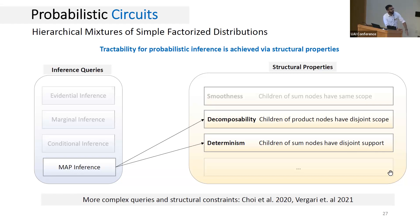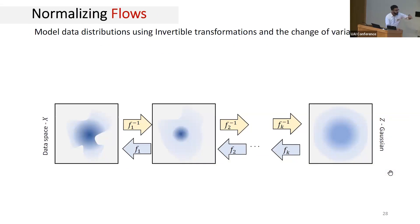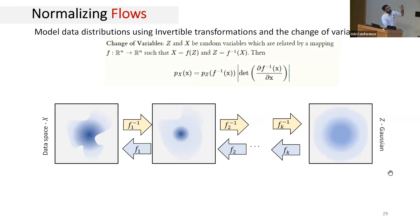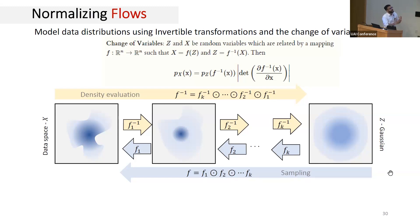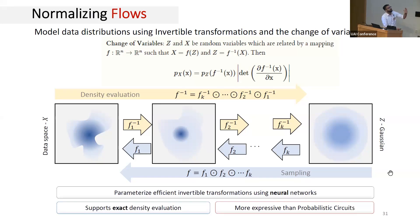The second type of models we consider are normalizing flows — deep generative models that use invertible and differentiable neural transformations, also known as diffeomorphisms, to map a complex data space into a simple base space such as a Gaussian. The diffeomorphic property allows exact density computation via the change-of-variables formula. Since diffeomorphisms are closed under composition, you can stack multiple transformations for expressivity. However, unlike PCs, normalizing flows cannot be used for more complex inference queries beyond evidential inference.